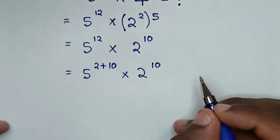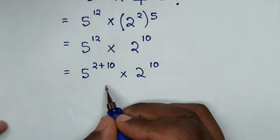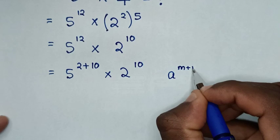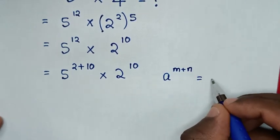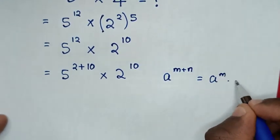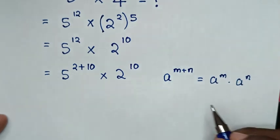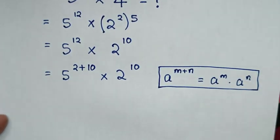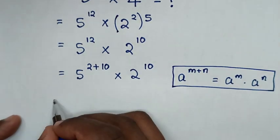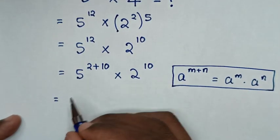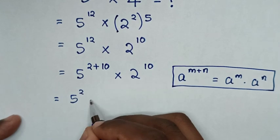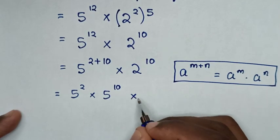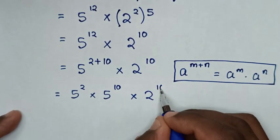Then in the next step, we will apply the exponential rule, which is: a power of m plus n is equal to a power of m times a power of n. It will be equal to 5 power of 2 times 5 power of 10, then times 2 power of 10.